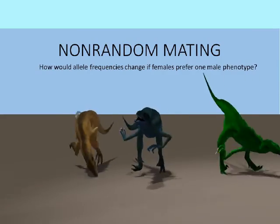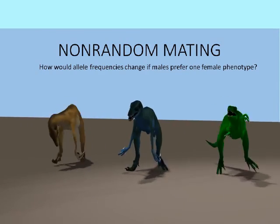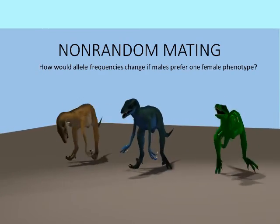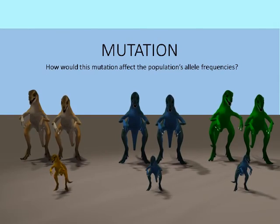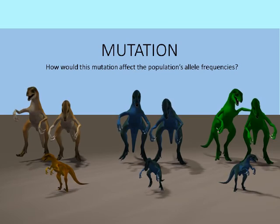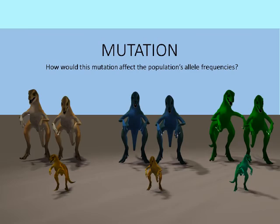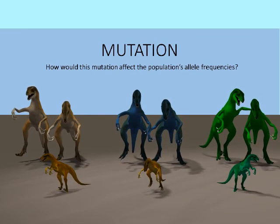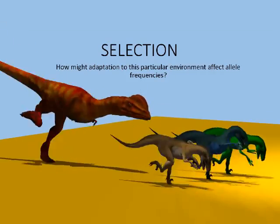If mating was non-random and females preferred a male with a specific phenotype, or if natural selection was making it less likely that one allele would be passed on to the next generation while another allele was more likely, this would tend to change allele frequency over time. We had gone through a number of examples of this, examining how a population might be affected by immigration, genetic drift, or non-random mating, and you made predictions on how allele frequencies would change.